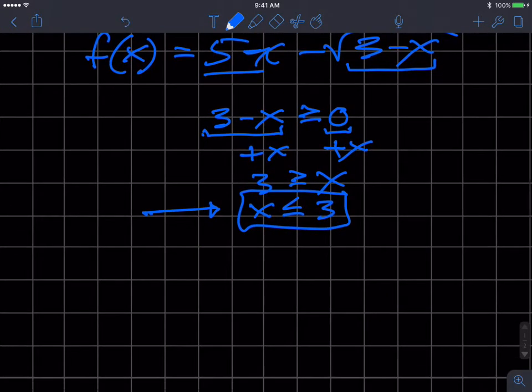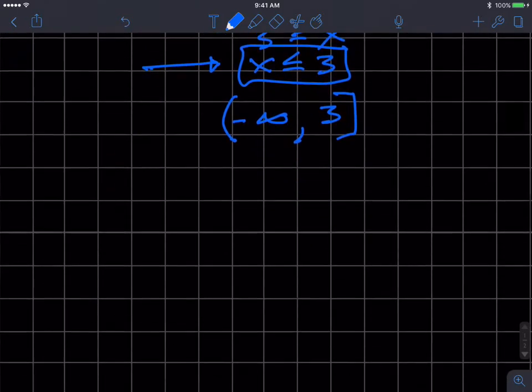And if we were to write that in interval notation, we would write less than or equal to 3. I can have all these numbers going down to negative infinity and I can go all the way to the right up to and including 3, and so I get this square bracket.